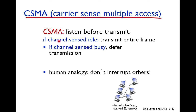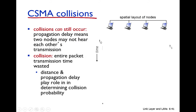So, carrier sense multiple access protocol means that before transmitting, the node listens to the medium. If the medium is idle, the node transmits the entire frame. If the channel is busy — meaning someone else is transmitting data on the link — then the node defers its transmission and waits. The human analogy of CSMA is: if someone is speaking, others will not interrupt. If two or more persons start speaking at the same time, both stop.